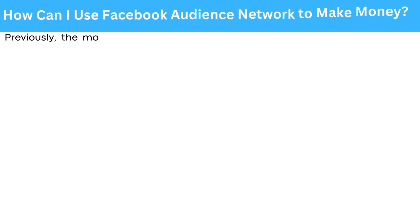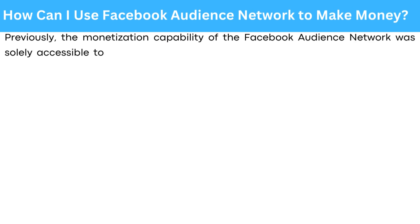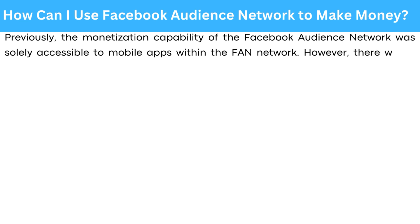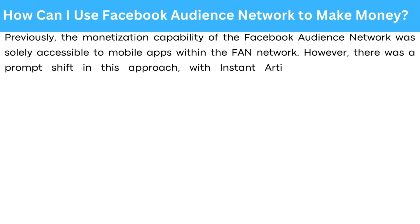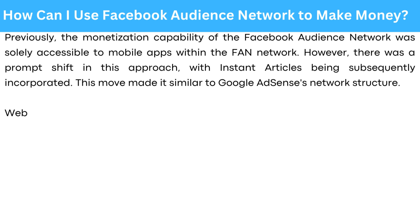Previously, the monetisation capability of the Facebook Audience Network was solely accessible to mobile apps within the network. However, there was a prompt shift in the approach, with instant articles being substantially incorporated. This move made it similar to Google AdSense's network structure.